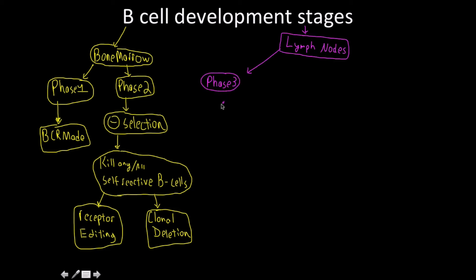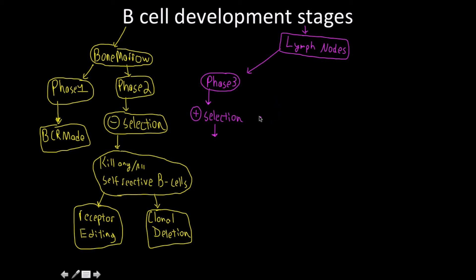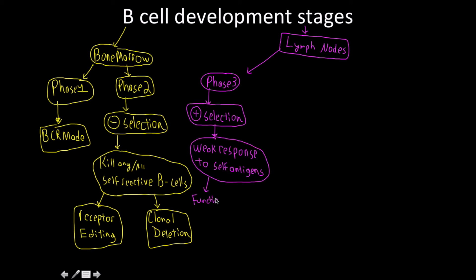Phase three takes place in the secondary lymphoid tissues and involves positive selection. To be sure we're maintaining the activity of our cells, only the ones that are reactive enough — competing for active binding sites at the lymph nodes due to a weak response to self-antigens — are going to survive. The strongly self-reactive ones have already been killed; we're keeping those aggressive enough for active binding. This maintains semi-functional BCR maintenance and helps with the maturation process.